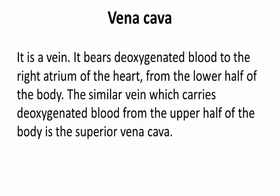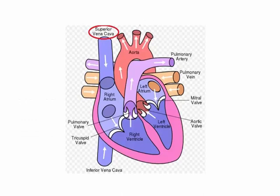Vena cava. It is a vein. It carries deoxygenated blood to the right atrium of the heart from the lower half of the body. The similar vein which carries deoxygenated blood from the upper half of the body is the superior vena cava.